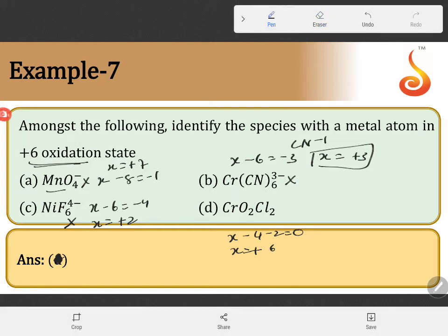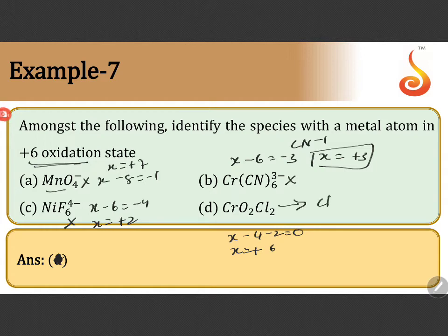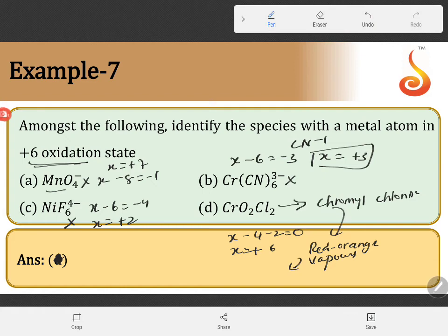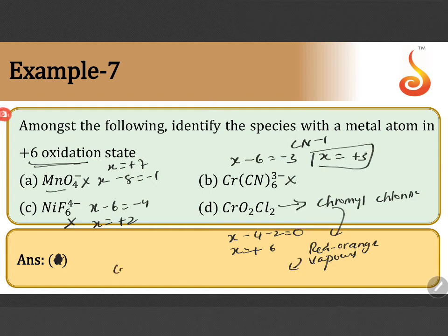Now this molecule is a very important molecule. It is called chromyl chloride. It is having a color of red orange vapors which is used as a confirmatory test for acid radical chloride. It is a confirmatory test in the laboratory for acid radical chloride.